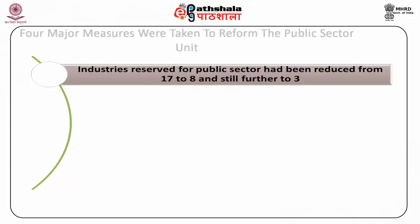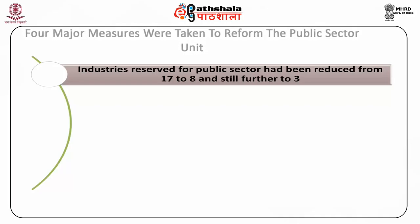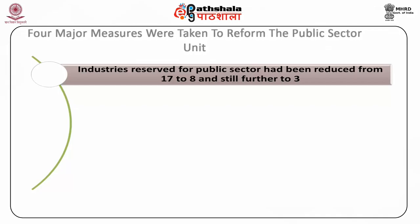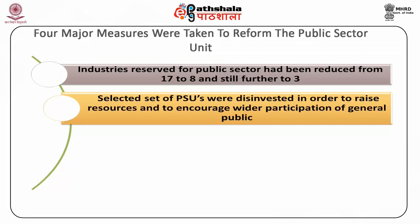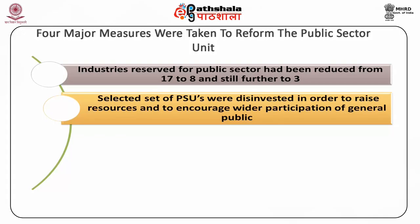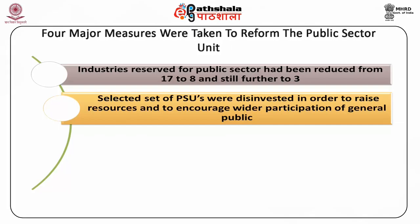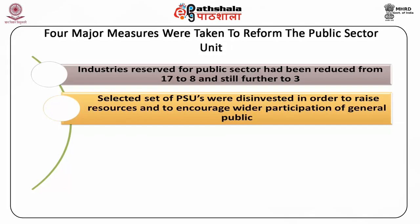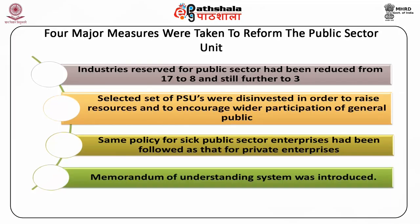Four major measures were taken to reform the public sector units. First, industries reserved for public sector had been reduced from 17 to 8 and still further to 3. Second, a selected set of PSUs were disinvested in order to raise resources and to encourage wider participation of general public and workers in the ownership of public enterprises. Third, the same policy for sick public sector enterprises had been followed as that for private enterprises. Fourth, the memorandum of understanding system was introduced.